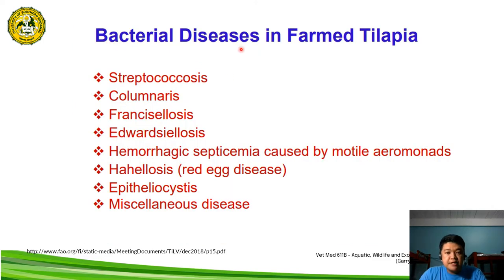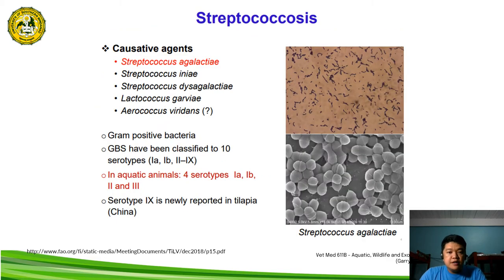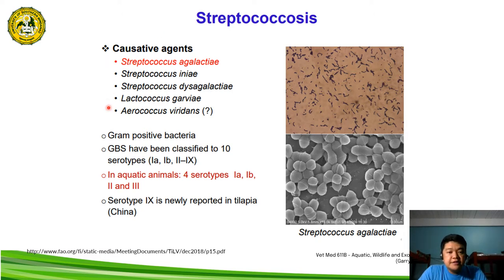These are the different bacterial diseases in farm tilapia as presented by the Food and Agriculture Organization. Starting with the bacterial disease known as streptococcosis, the causative agents include Streptococcus agalactiae, Lactococcus garvieae, and Enterococcus viridans.